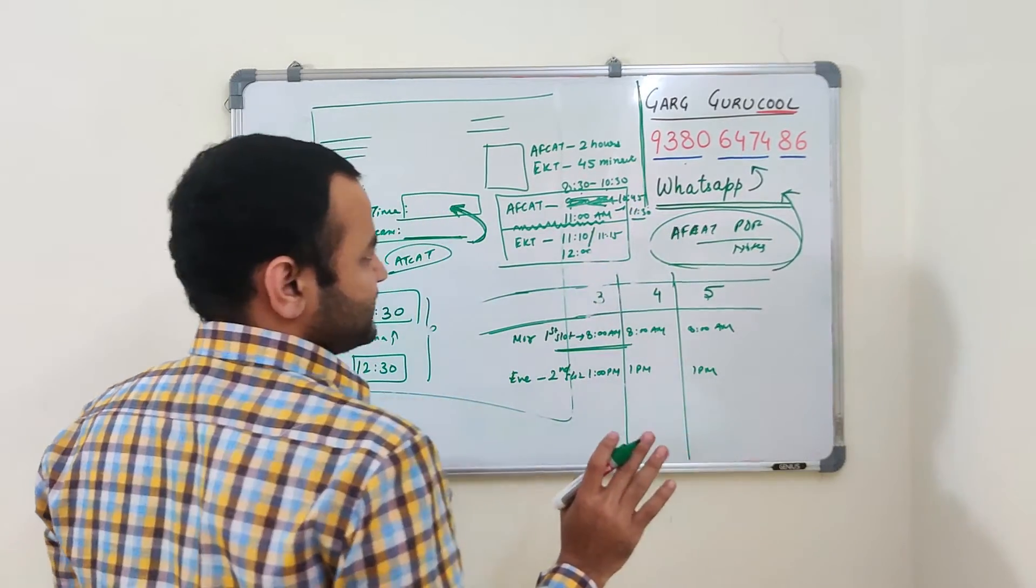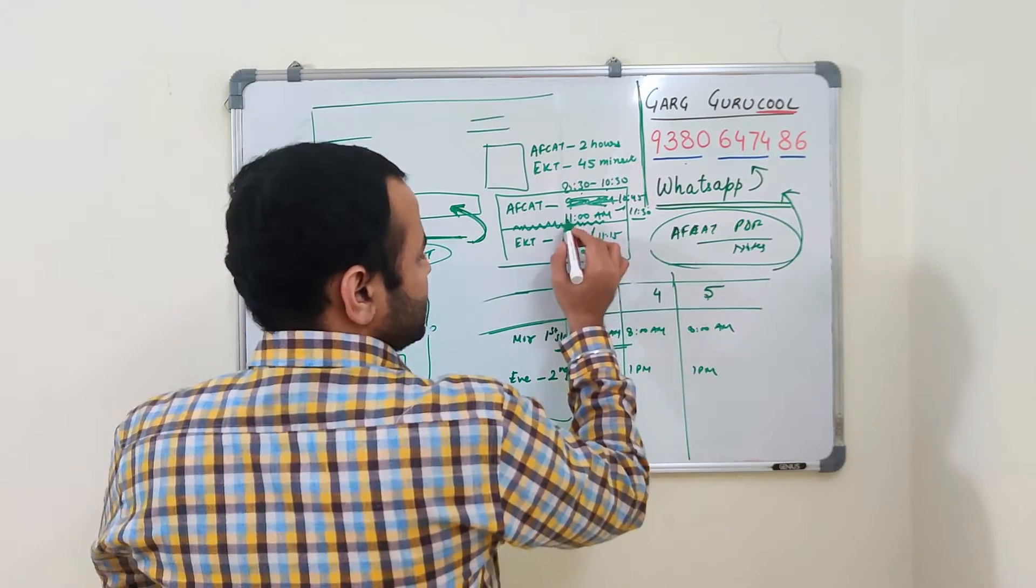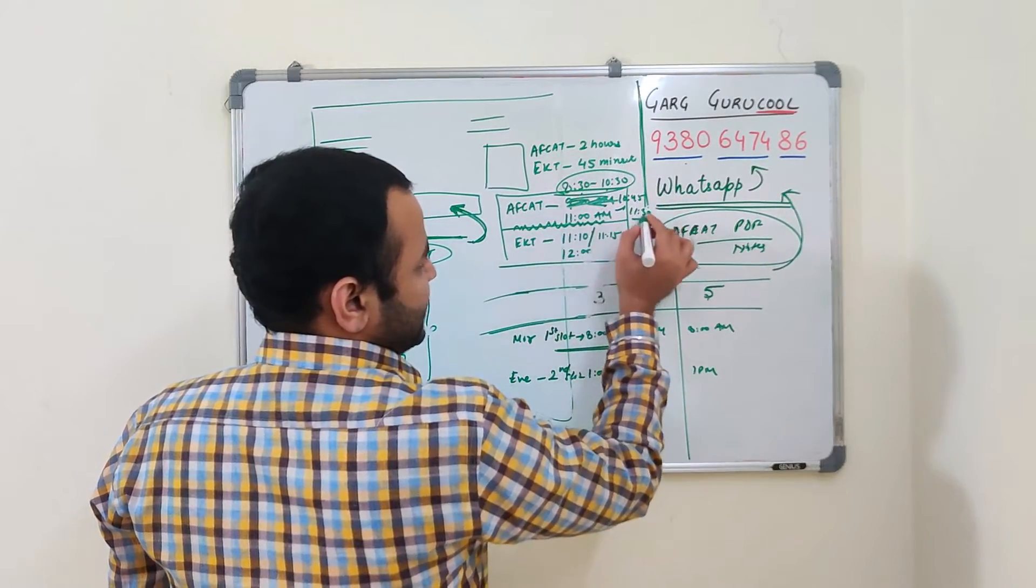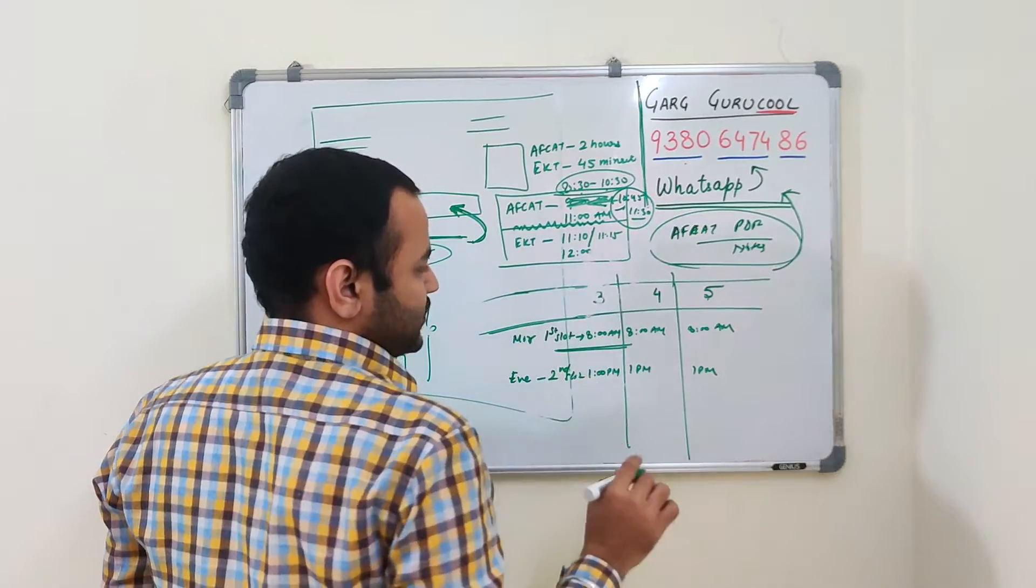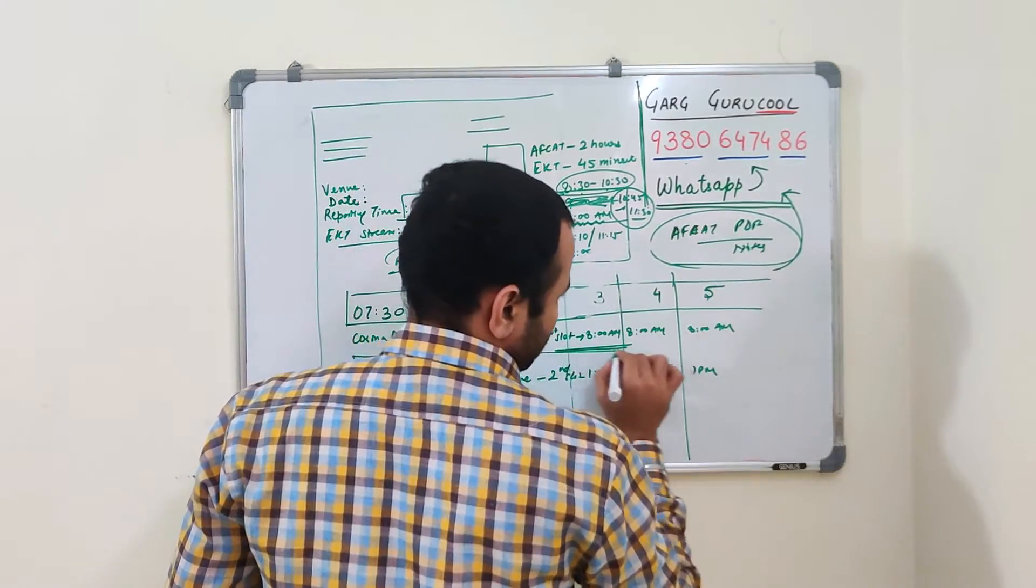I don't think you must be having doubts. Clear? So first you will have 2 hours of AFCAT and then you will have 45 minutes of EKT. Similar process will be followed on all the days.